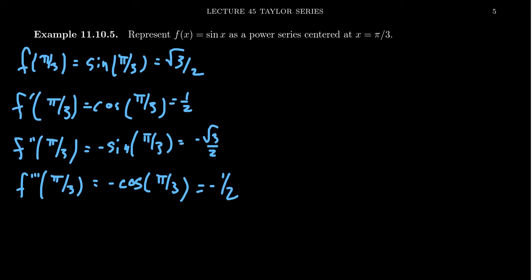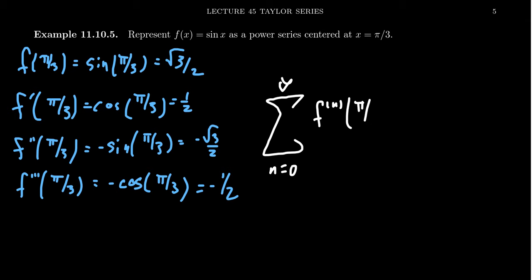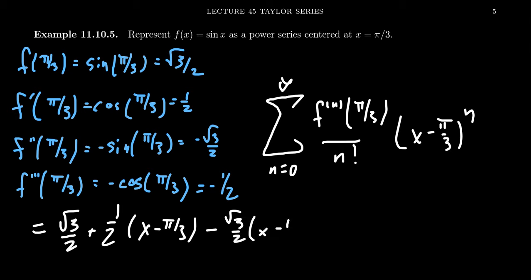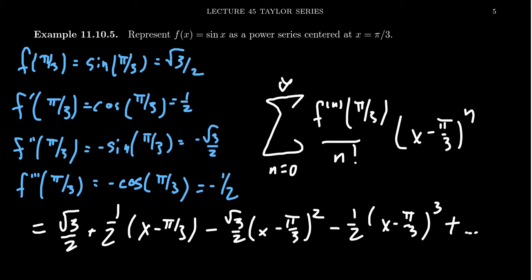This one's a little more difficult to express because we don't have as much simplification as before. We take the sum as n ranges from 0 to infinity of the nth derivative evaluated at pi thirds, divided by n factorial, times x minus pi thirds to the n. Written in expanded form, this looks like root 3 over 2, plus 1 half times x minus pi thirds, minus root 3 over 2 times x minus pi thirds squared, minus 1 half times x minus pi thirds cubed, and the pattern repeats.